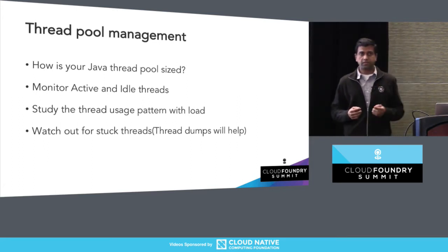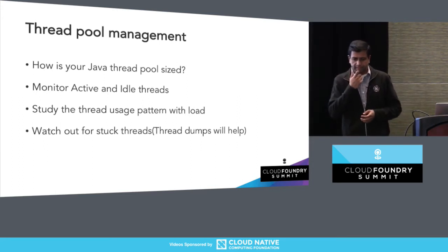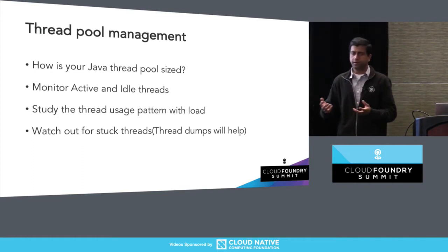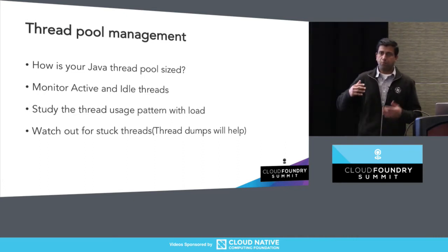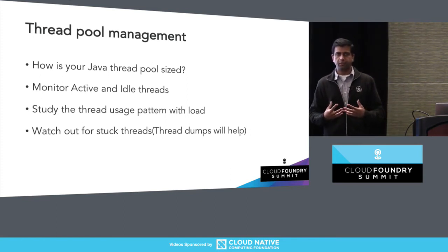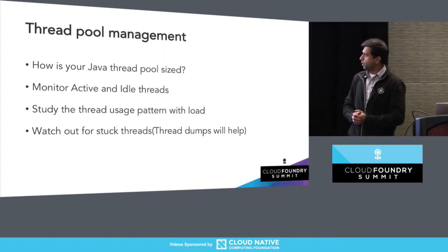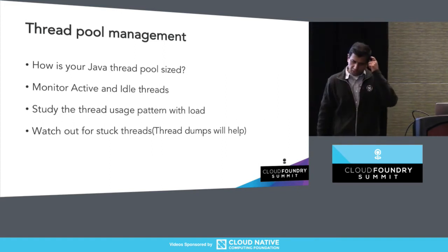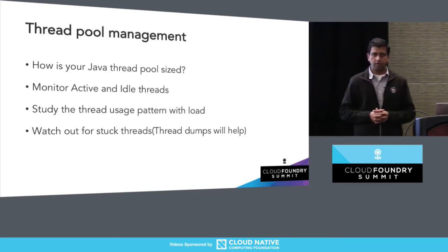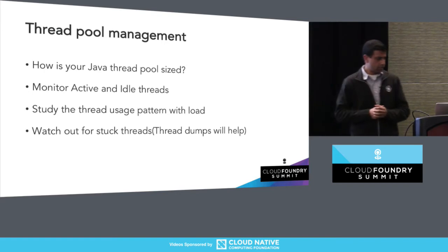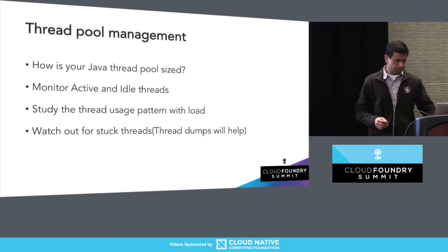One of the things we have also come across is stuck threads. Many of these monitoring tools give you options to do thread dumps, and if you're using Spring Actuator, it also gives you endpoints to take thread dumps and heap dumps. Make use of them. When looking at thread dumps, you probably want to take multiple dumps at a five-minute or one-minute interval and see how the threads are moving — are they even processing something, or are they stuck in one place?